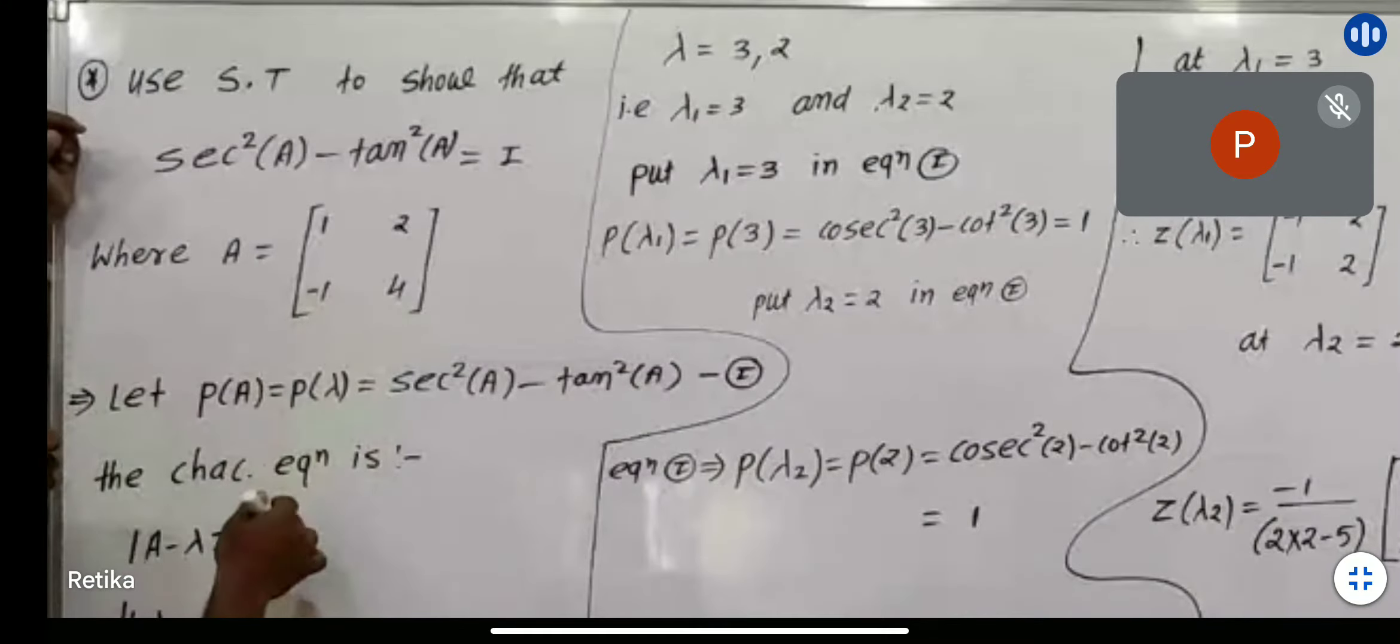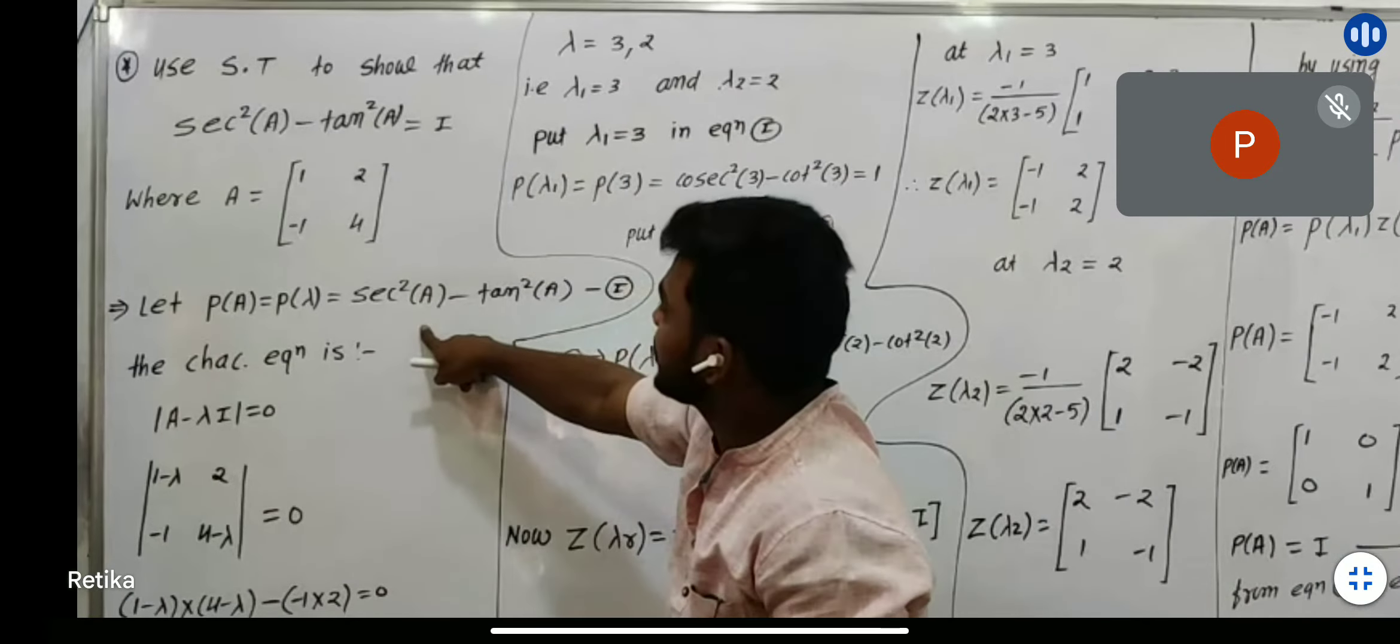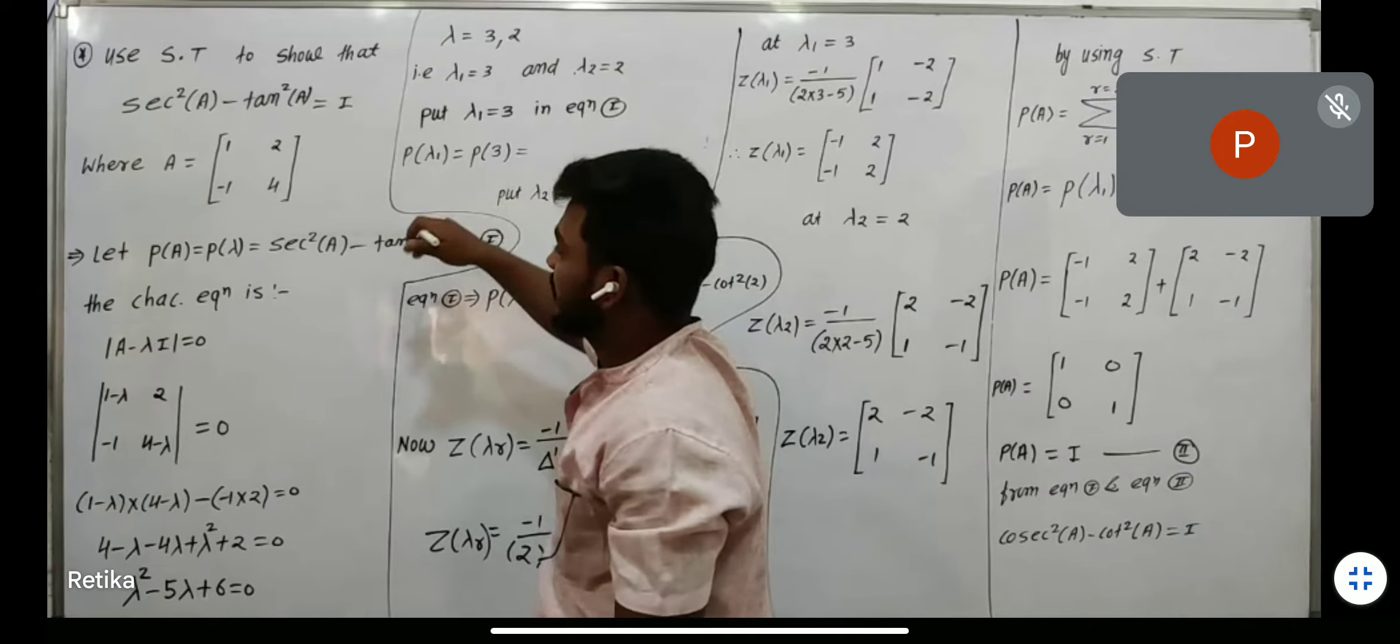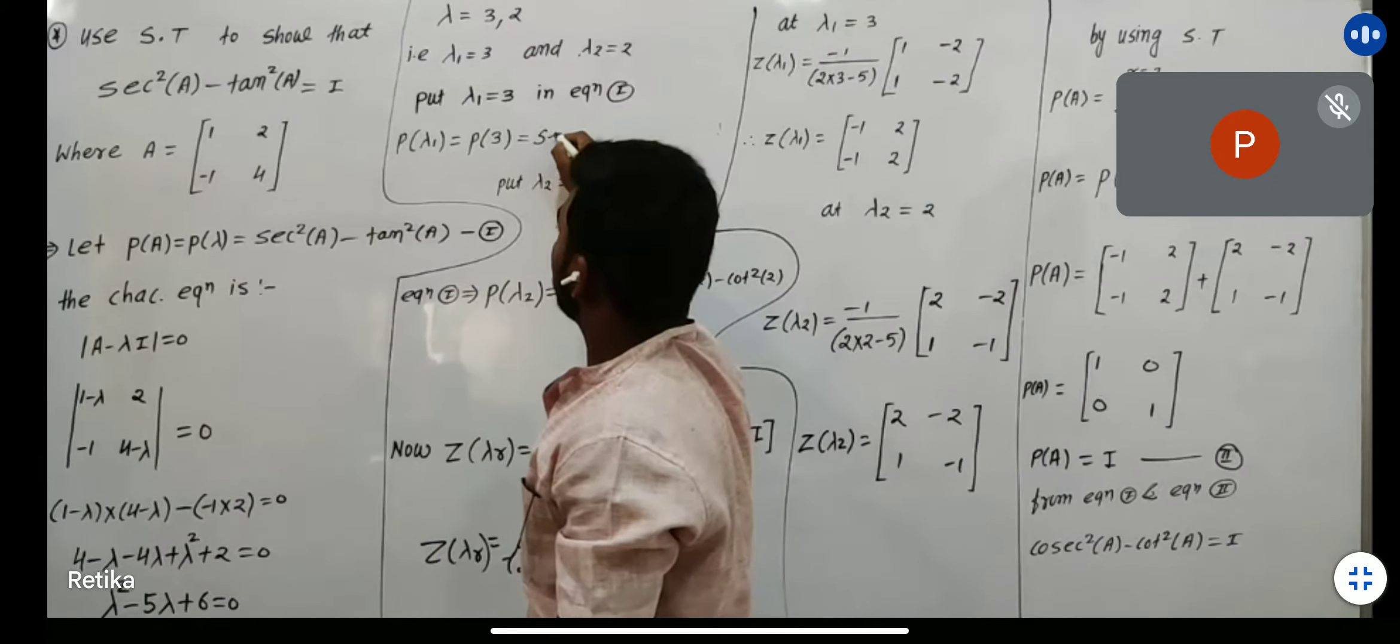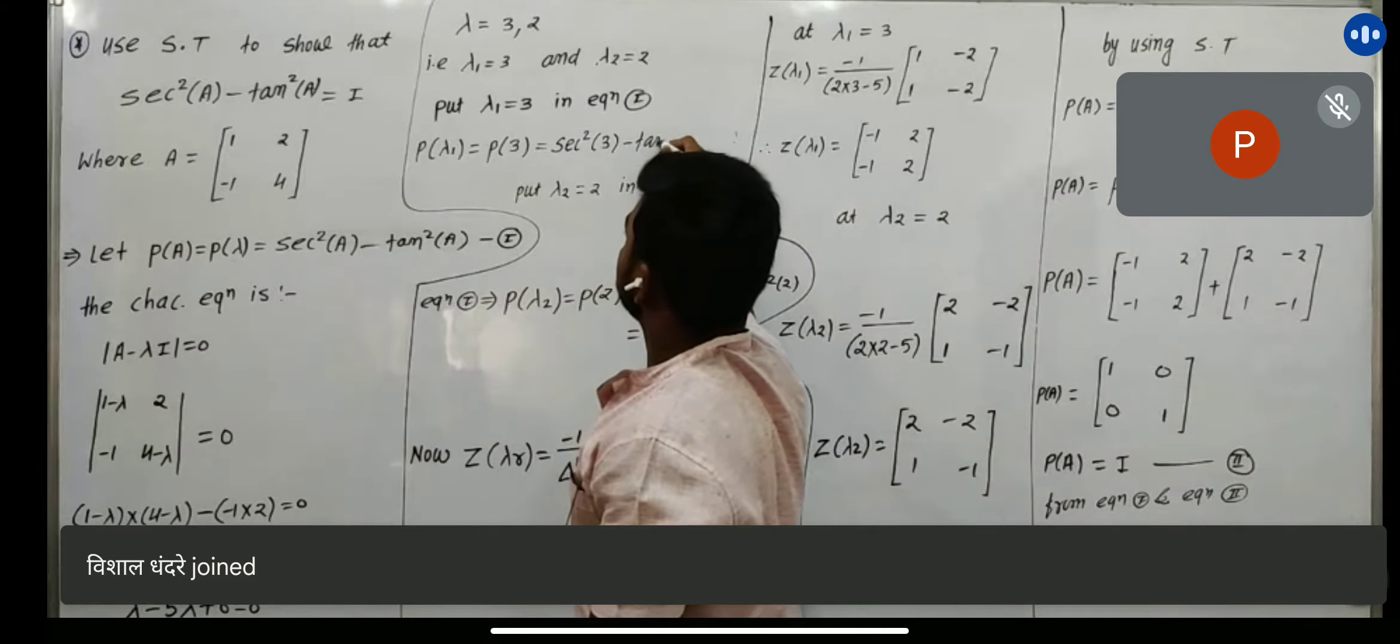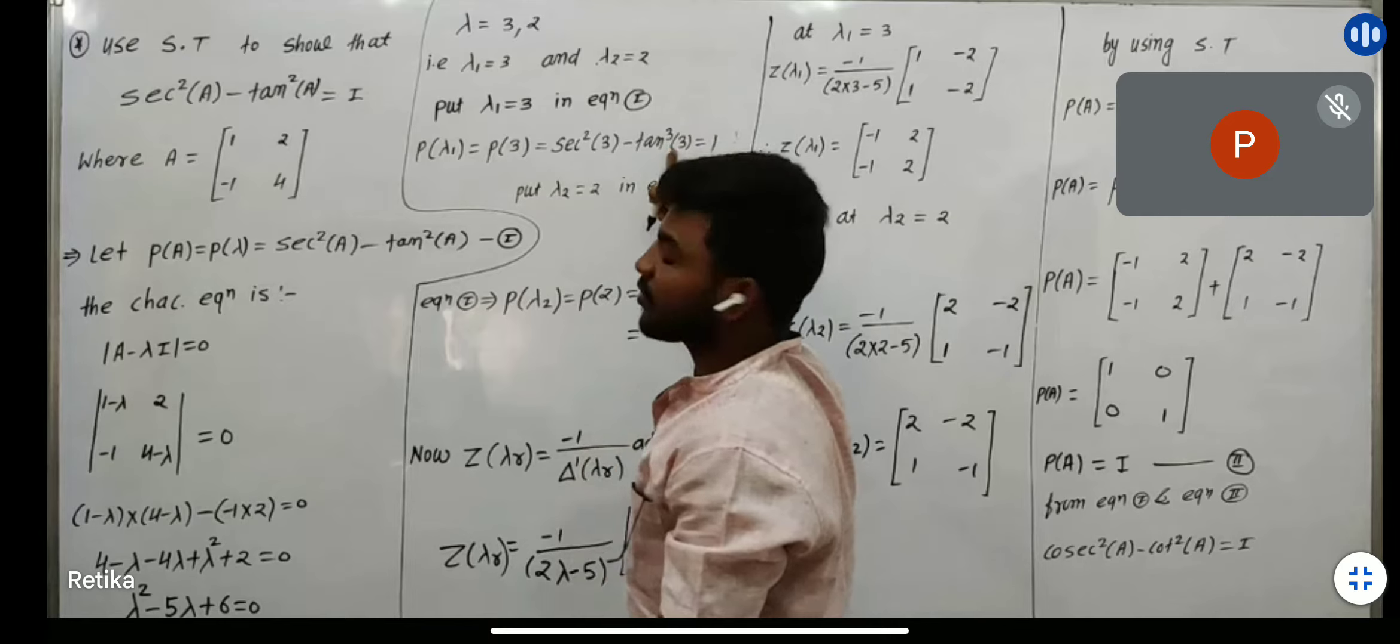If you find lambda 1 and lambda 2, when you put lambda 1 equals to 3, what will be sec square 3 minus tan square 3 equals to? What will result from both angles? 1.